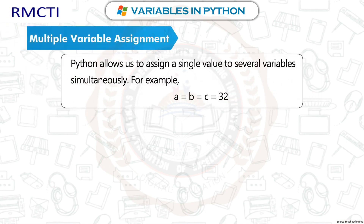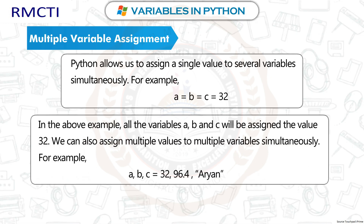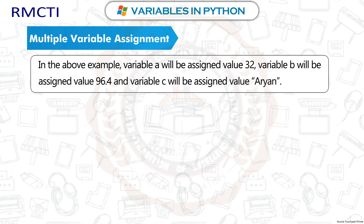Multiple variable assignment: Python allows us to assign a single value to several variables simultaneously. For example, a = b = c = 32. In this case, all variables a, b, and c will be assigned the value 32. We can also assign multiple values to multiple variables simultaneously. For example, a, b, c = 32, 96.4, 'Aryan'. Variable a gets 32, variable b gets 96.4, and variable c gets 'Aryan'.